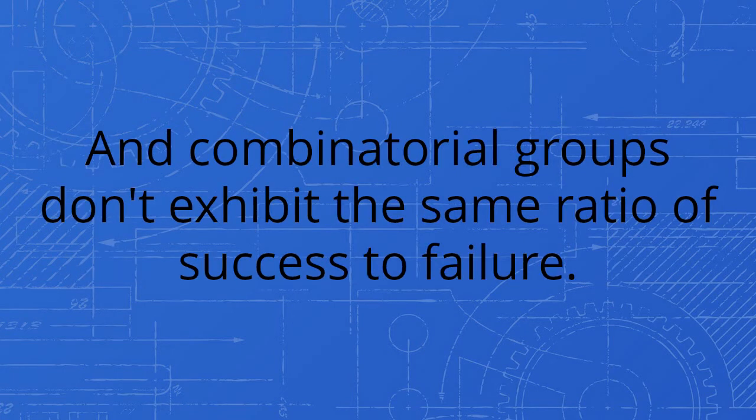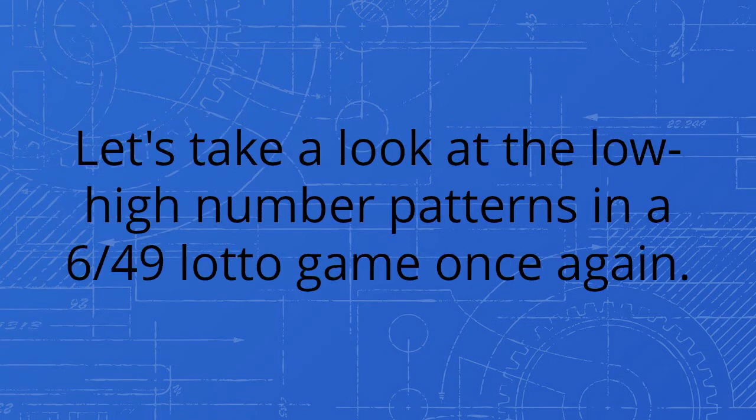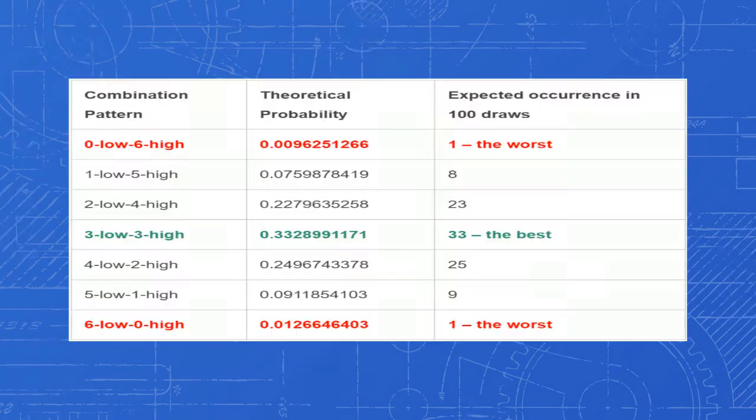Let's take a look at the low-high number patterns in a 6/49 lotto game once again. The difference between the best pattern and the worst pattern is huge. The three low three high combination pattern appears 33 times in 100 draws, while the six low zero high pattern appears only once in 100 draws.